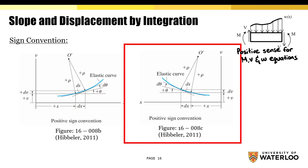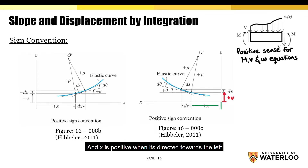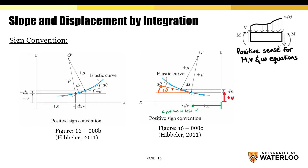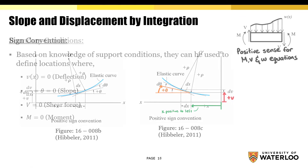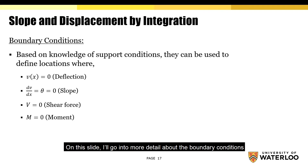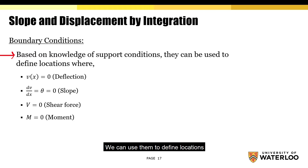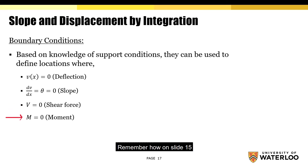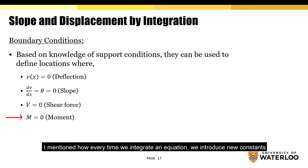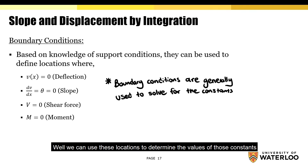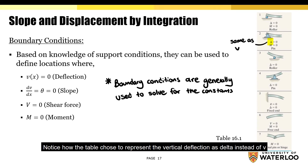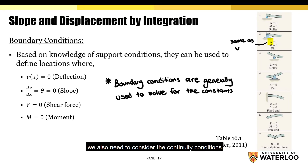By the same logic, if v is positive going upwards and x is positive when it's directed towards the left, then theta will be positive when it rotates in the clockwise direction from the x-axis. On the following slide, I'll talk about the boundary conditions. Based on our knowledge of the support conditions, we can use them to define locations where deflection, slope, shear force, or moment is equal to zero. We can use these locations to determine the values of the integration constants. I've included a table containing all the supports you'll encounter, along with the parameters that would equal zero. Notice how the table chose to represent the vertical deflection as delta instead of v.